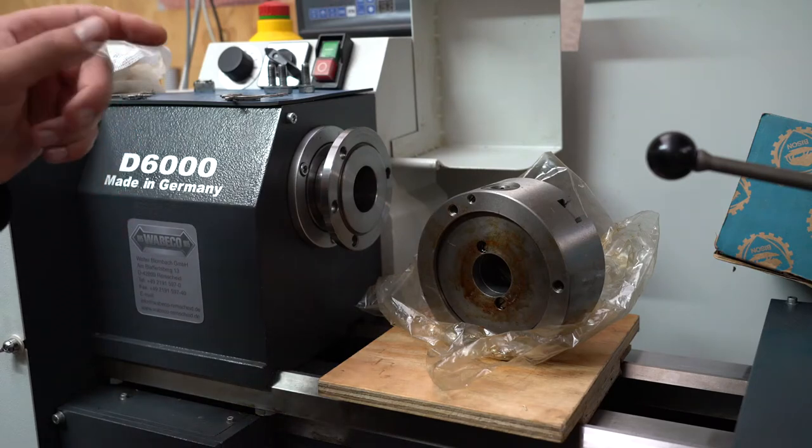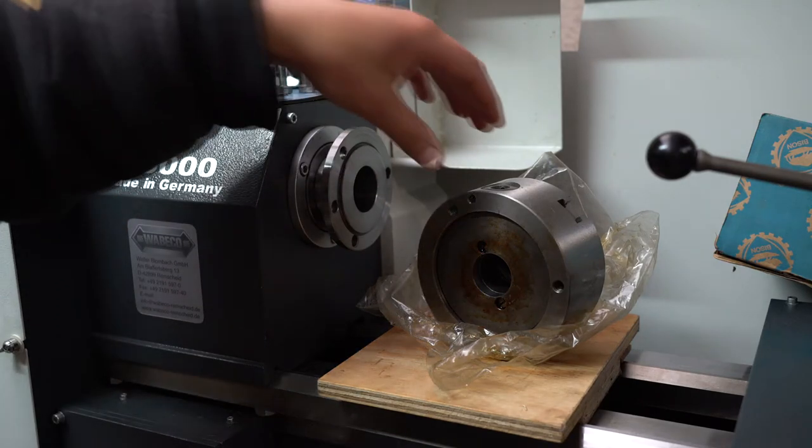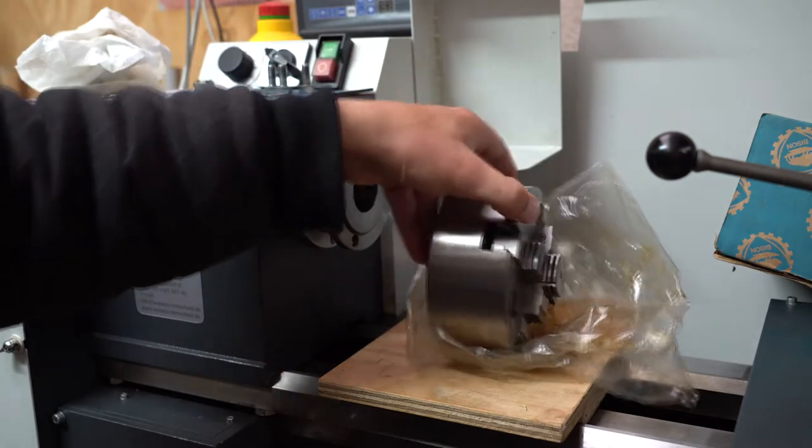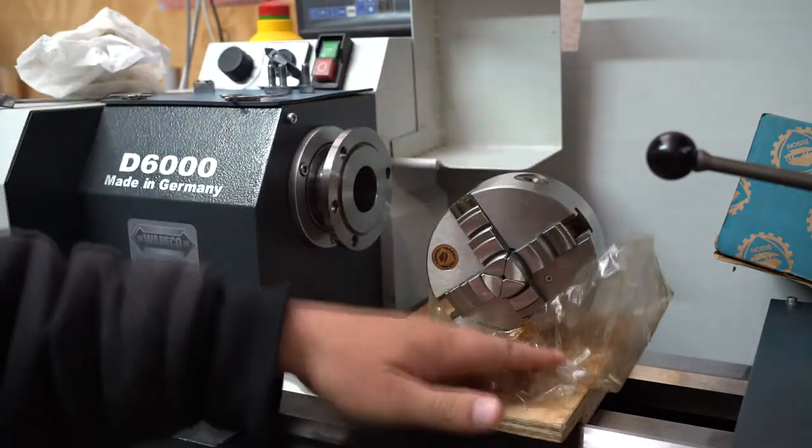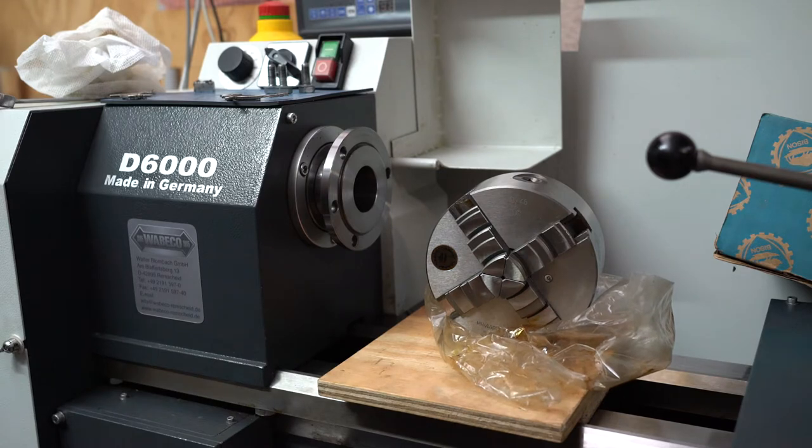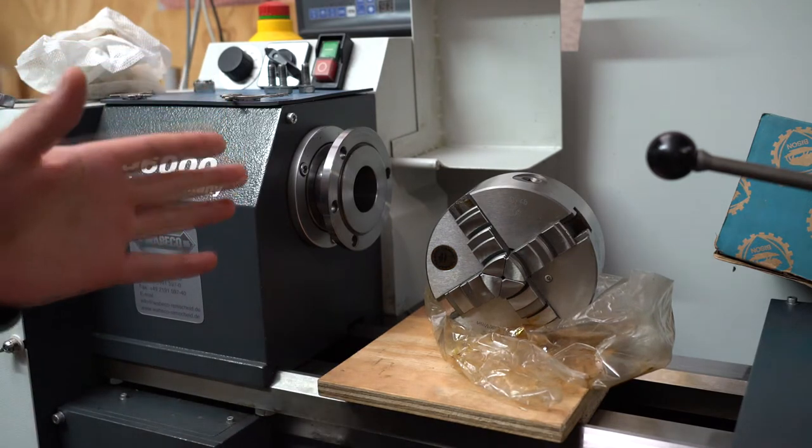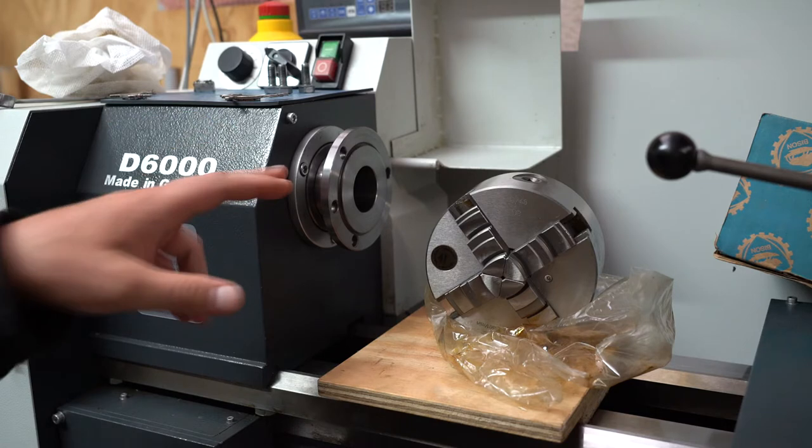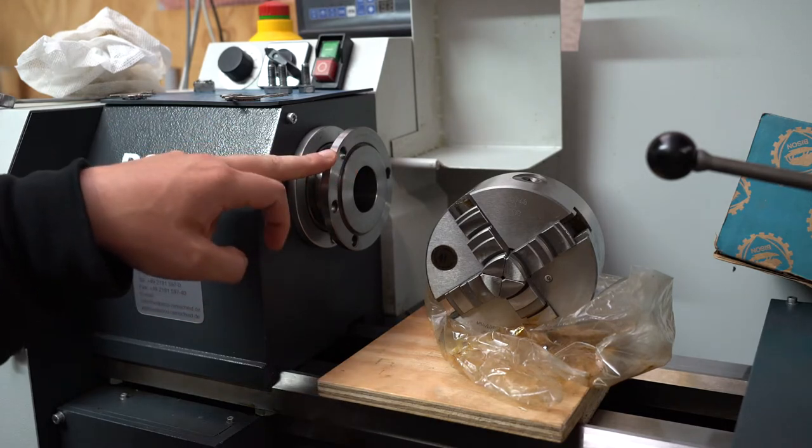Hello everyone, in this video I'm going to be making a chuck back plate for this four jaw self-centering Bison chuck that I recently purchased. Now I've always found making chuck back plates challenging since you have to maintain fairly tight tolerances to have everything fit snugly.